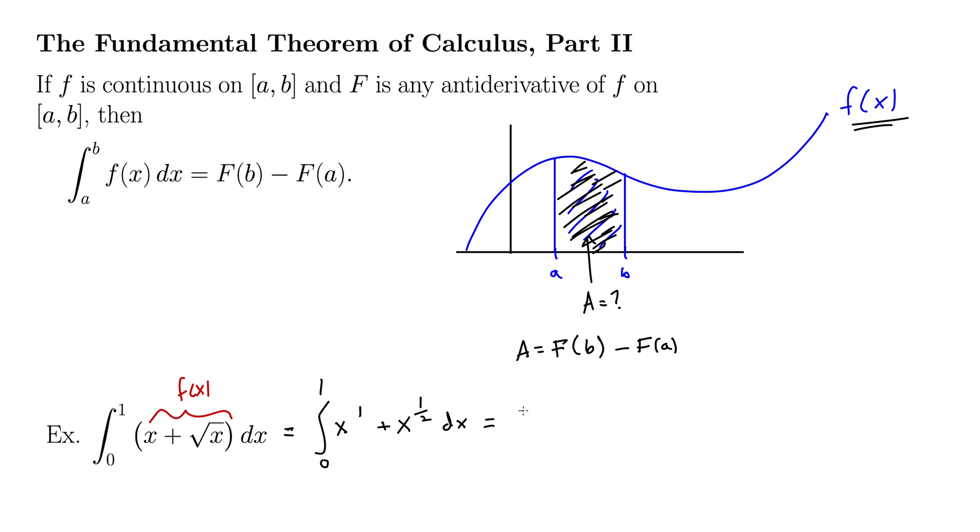So when we integrate this thing, this becomes x to the 1 plus 1, so 2 over 2, plus x to the 1 half plus 1, so that's 3 halves over 3 halves, which I'll write as 2 thirds times it there. When you're dividing by a fraction, just multiply by the reciprocal.